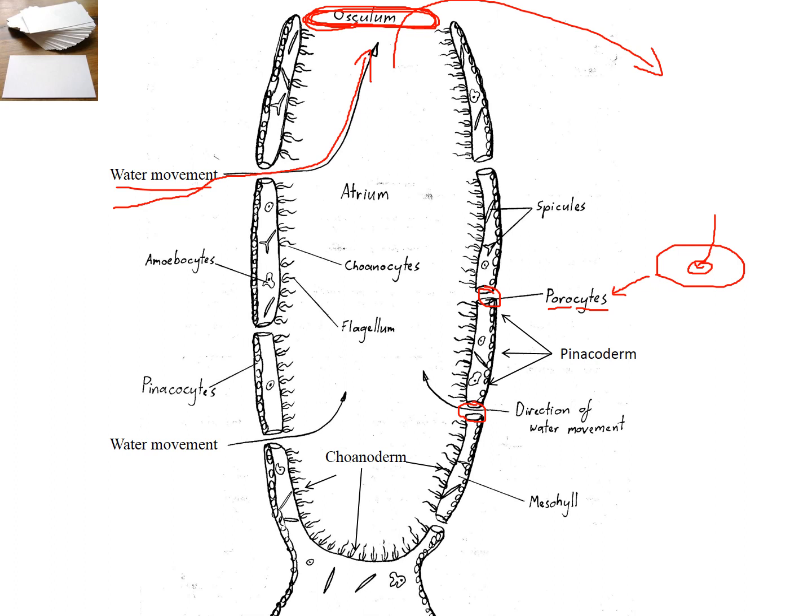And the osculum is the opening to the sponge. Now, if you think about it, you will never be able to see a single cell. So you can't see where the water goes into a cell or into a sponge. If you see a hole in a sponge, and you will see lots of holes in sponges, that is where water is flowing out.